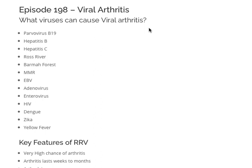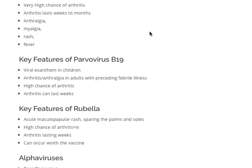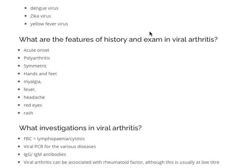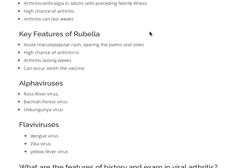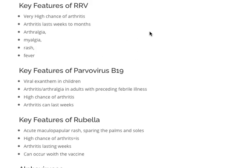The key features generally on presentation will be an acute onset of a polyarthritis that's symmetric, affecting your hands and feet, and associated with things like myalgia, fever, headache, rash, and red eyes. The exact picture depends on the virus. For example, in Ross River virus, you'll get arthralgia, myalgia, rash and fever, and arthritis that lasts weeks to months.